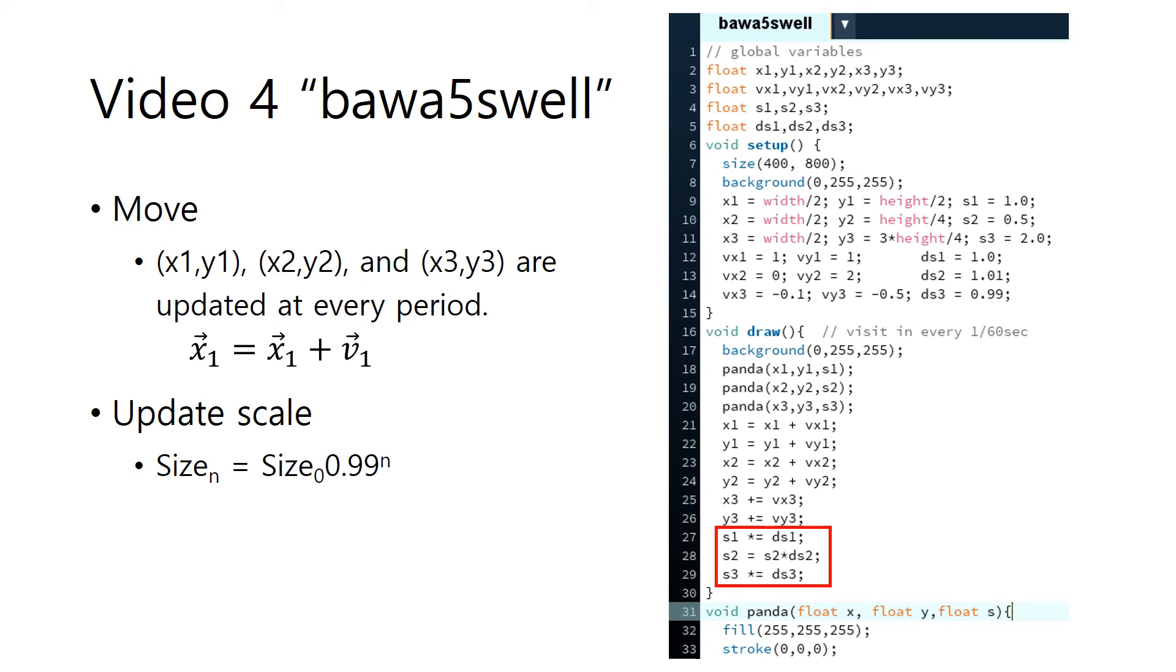Can you move your character? Yes, you can. In the program I gave you, you have Bawa5cell. In this case, there are three pandas. The location of a panda is x1, y1, x2, y2, and x3, y3 respectively. And this location of a panda is updated by using velocity vector v1, v2, and v3 every draw.